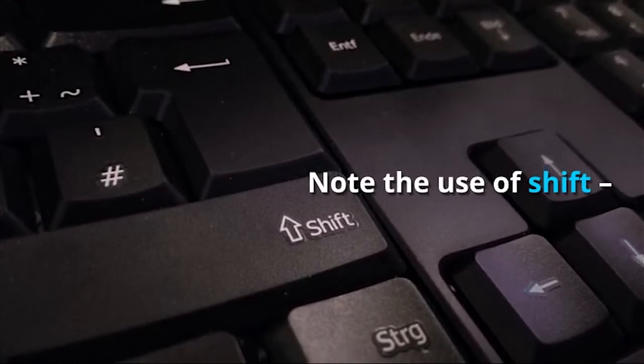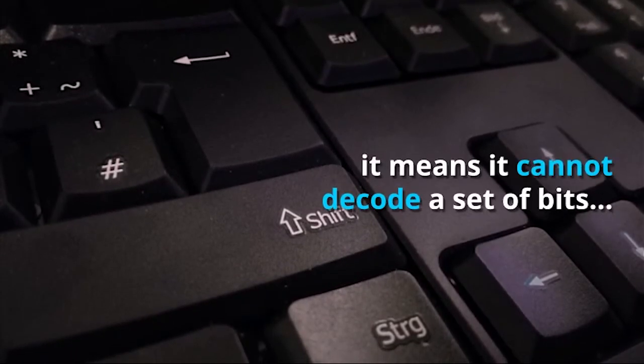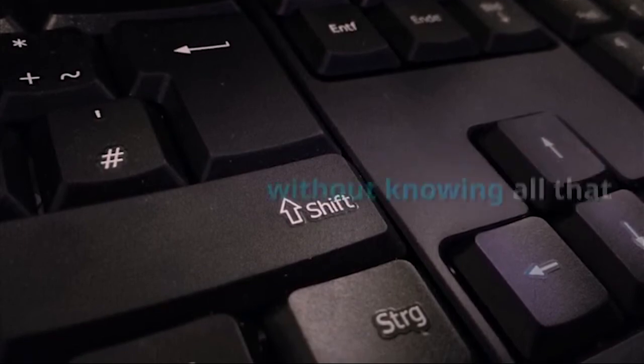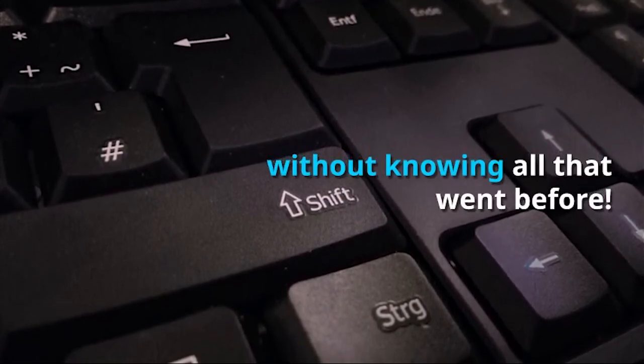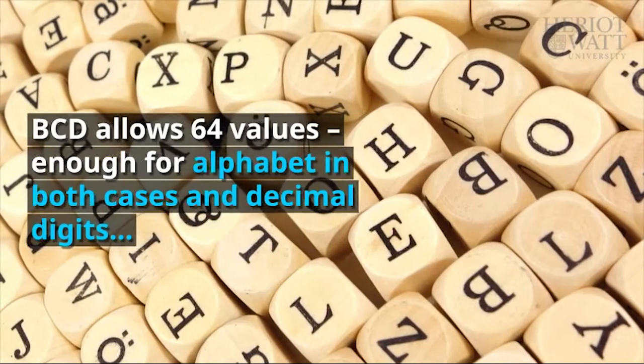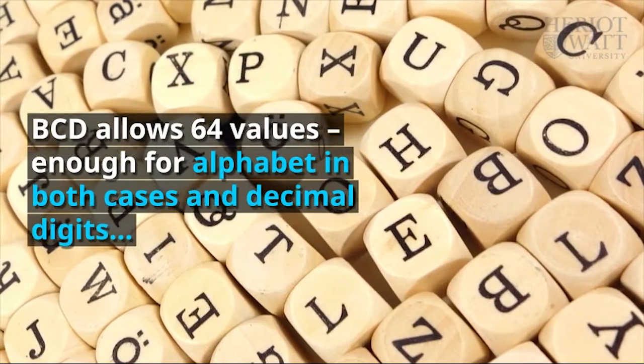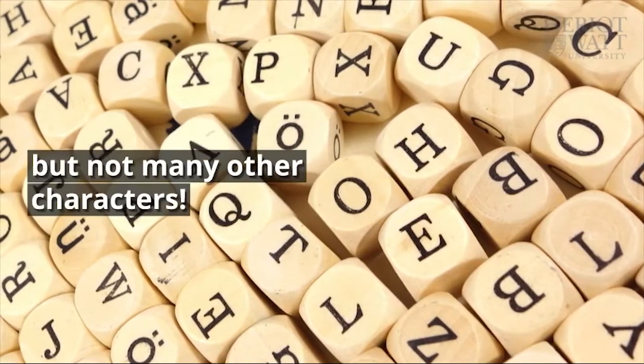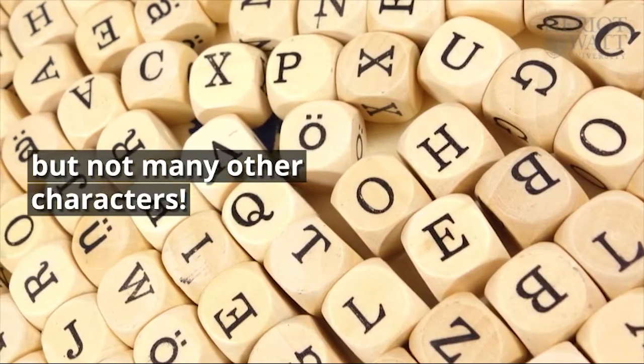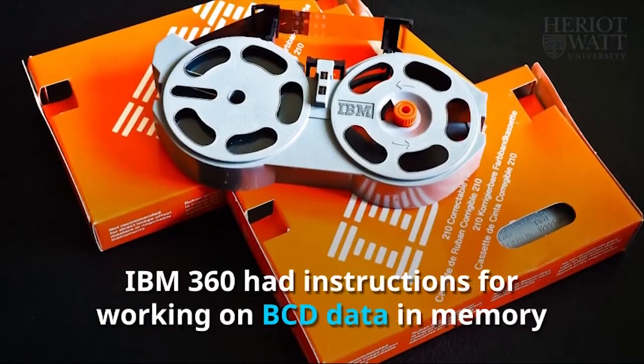Note the use of shift. It means it cannot decode a set of bits without knowing all that went before. BCD allows for 64 values, enough for alphabet in both cases and decimal digits, but not for many other characters. IBM 360 had instruction for working on BCD data in memory.